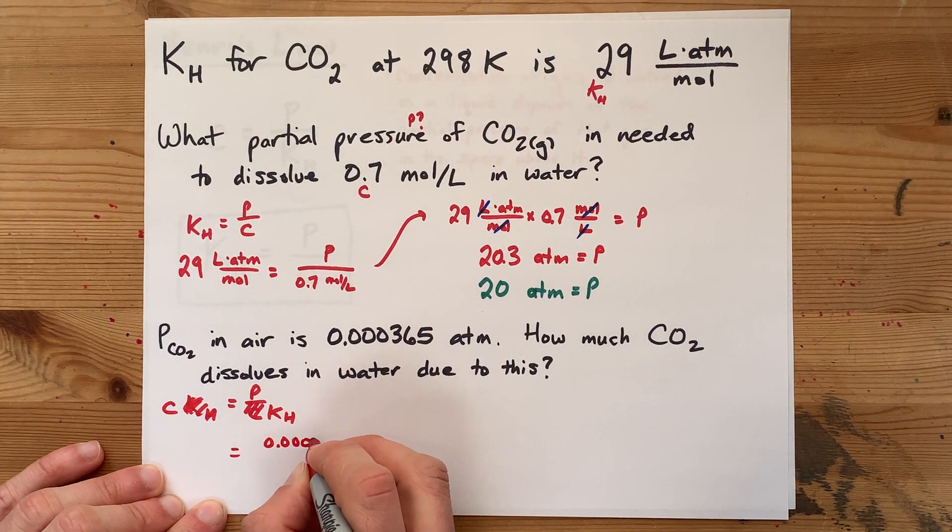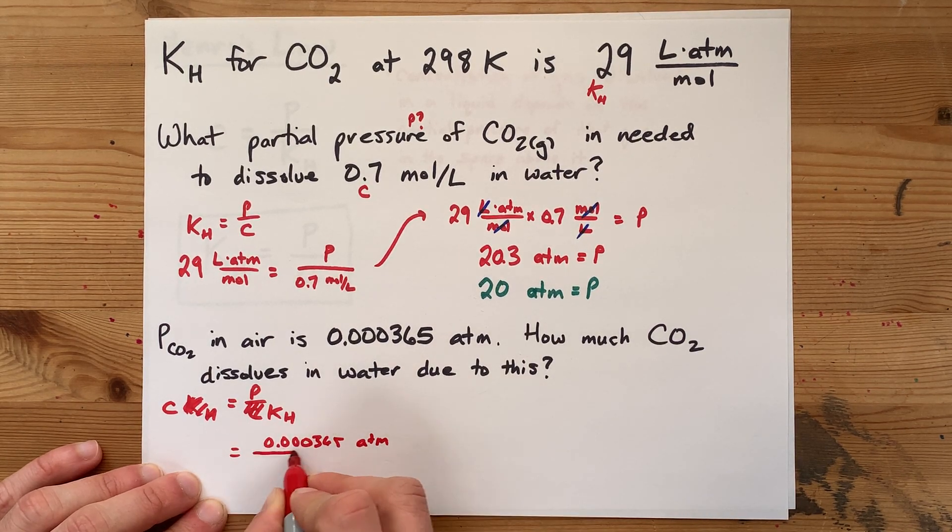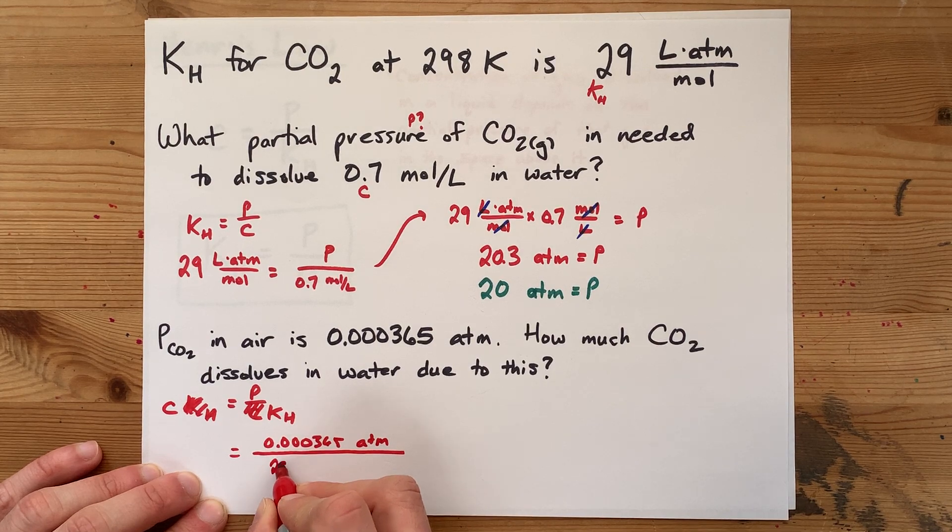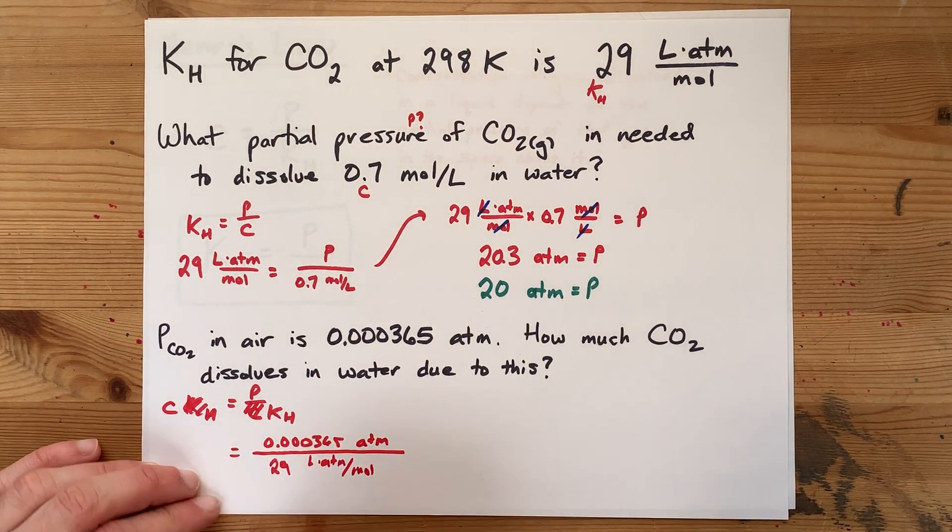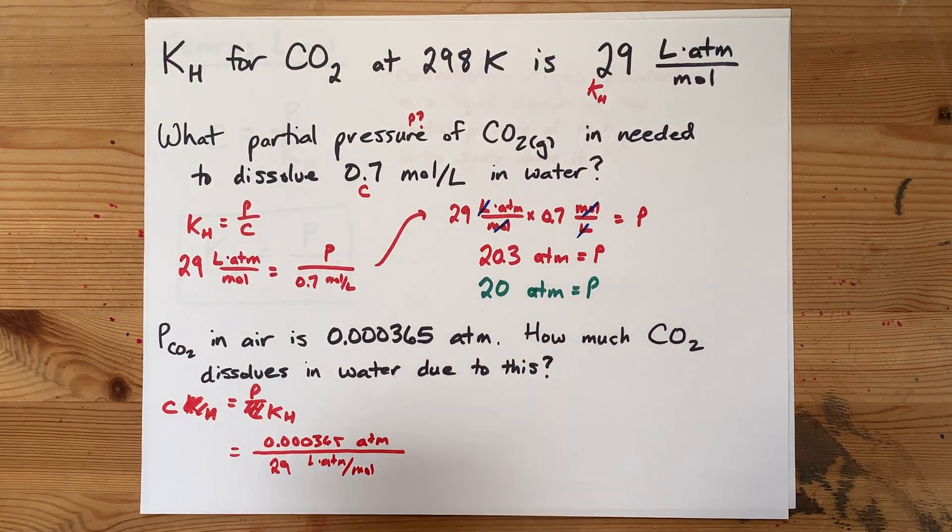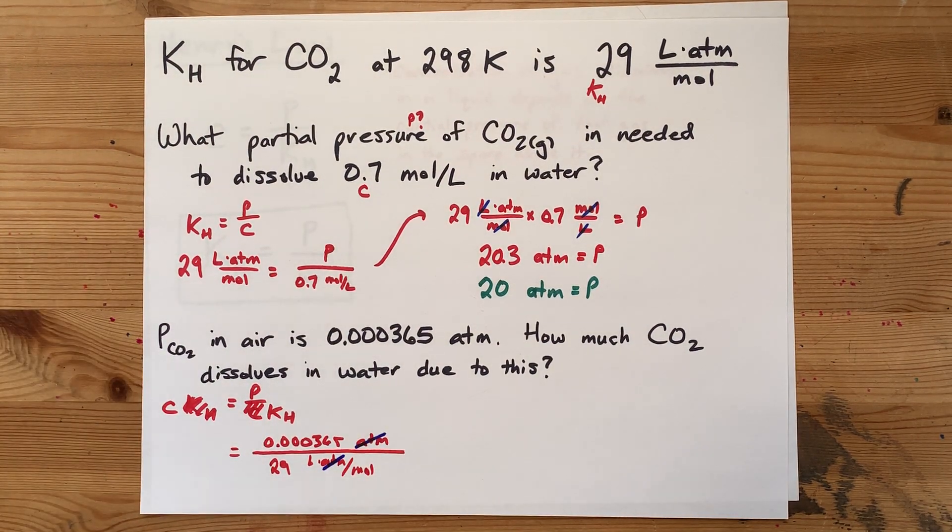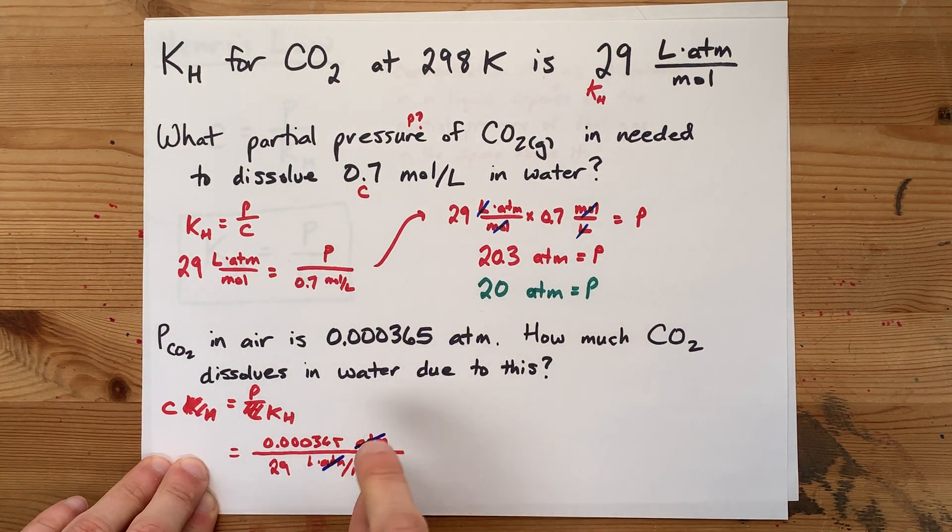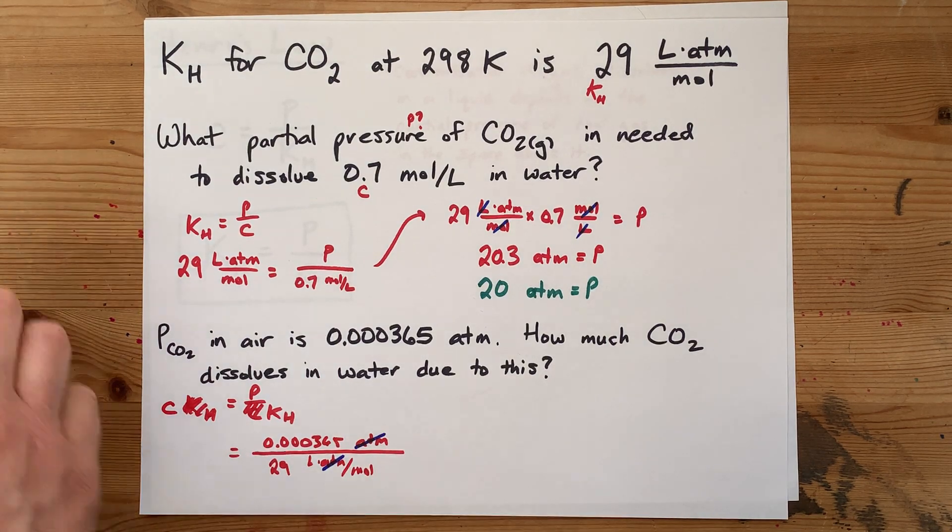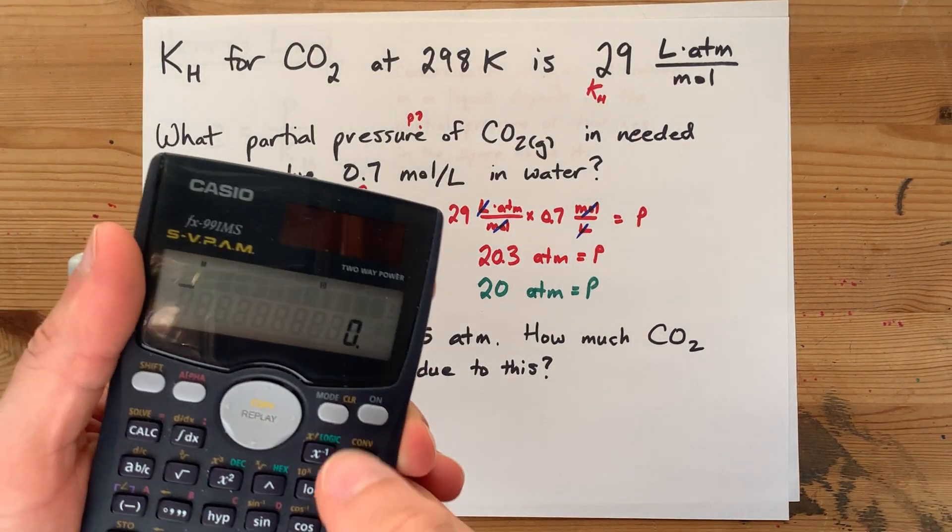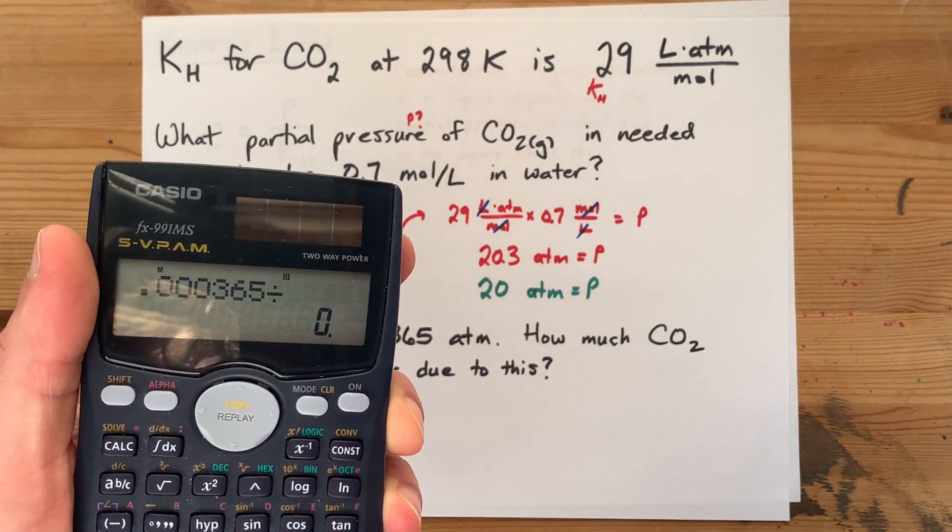0.000365 atmospheres, and we are going to divide it by 29 liters atmospheres per mole. Now again with the unit cancelling, atmospheres divided by atmospheres, and we are dividing by liters per mole, which actually flips that answer into moles per liter.